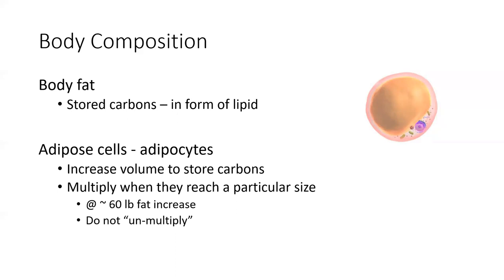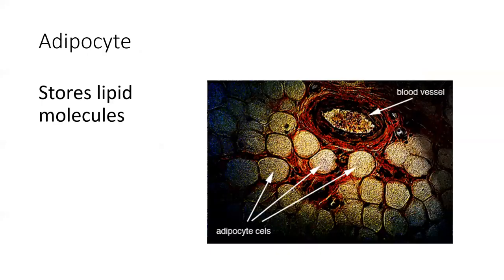That's why it's really difficult for people who gain a large amount of adipose tissue and then lose that body fat — they keep those adipocytes. So it's very easy for them to restore body fat because they have all of these storage cells. It's like buying a bunch of storage units and then getting rid of all the material, but then having another place to put extra material if you try to gain it back. We store those lipids in multiple places around the body.